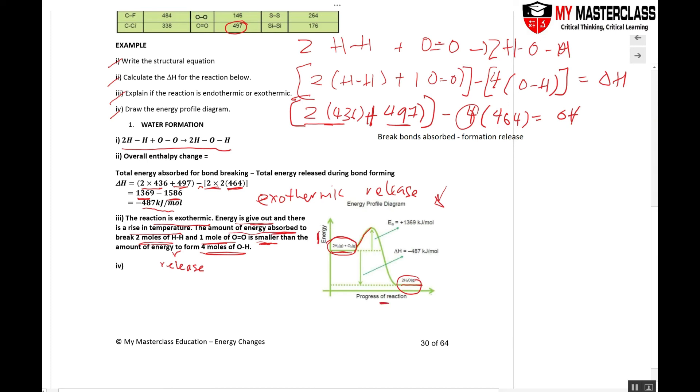Activation energy is from the reactants to the top of the hump. Put it an upward arrow. And this is 1369. Why is it 1369?